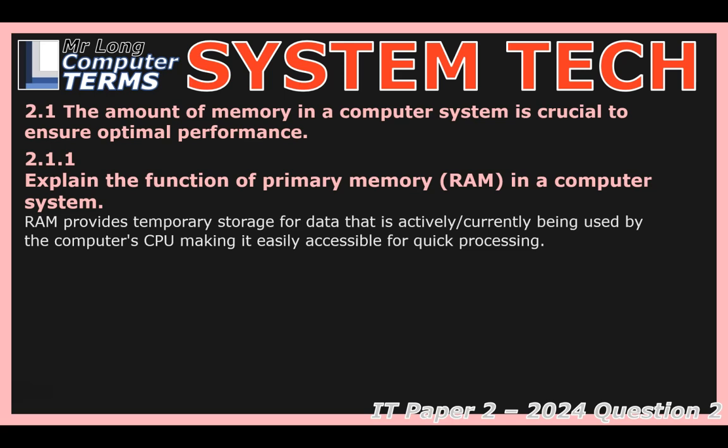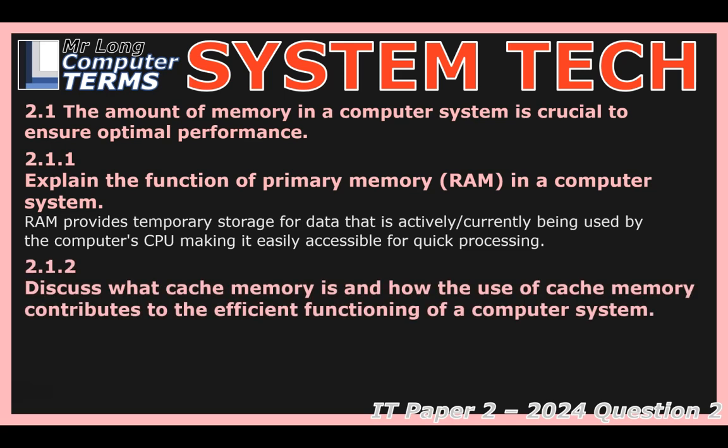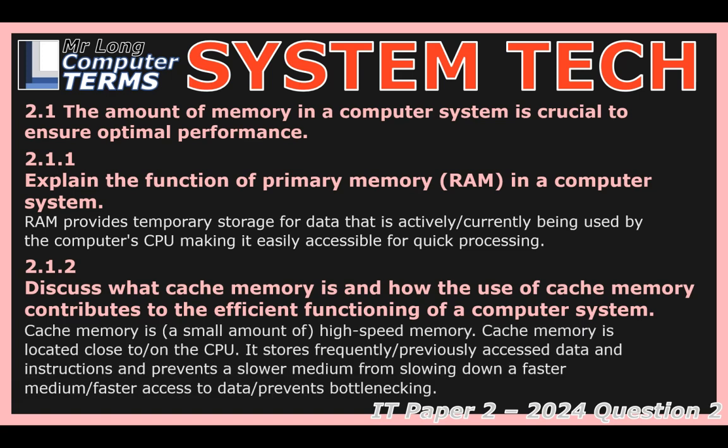So RAM is like a workbench — the CPU's doing its work and everything it needs is right there ready to grab. But then there's cache memory, which people say is even faster. Cache memory is a tiny amount of extremely high-speed memory, often built right onto the CPU chip itself or very close to it. Its job is to store the data and instructions used most frequently or most recently — acting as an ultra-fast buffer between the super-fast CPU and the slightly slower RAM, stopping RAM from becoming a bottleneck.